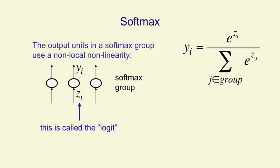What's more, the yi's have to lie between zero and one. So we've forced the yi's to represent a probability distribution over mutually exclusive alternatives just by using that softmax equation.